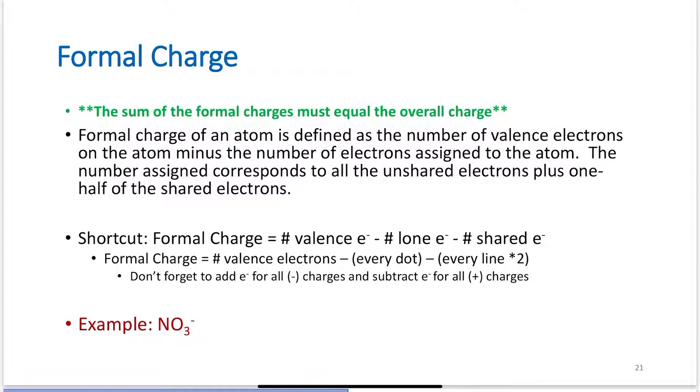For example, let's work NO3 minus to actually see what the heck this means. So NO3 minus: I have 1 nitrogen which has 5 valence electrons. I have 3 oxygen, 3 times 6 valence electrons. Overall that gives me 23 valence electrons, but I have a negative 1 charge, so I'm going to add 1 valence electron giving me 24 valence electrons.